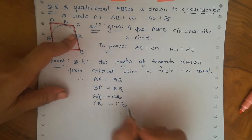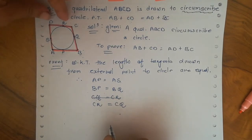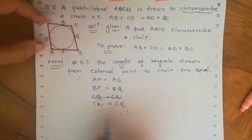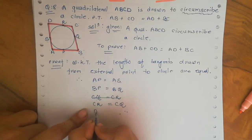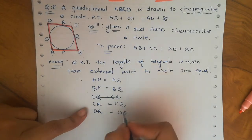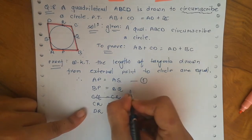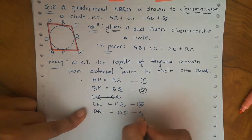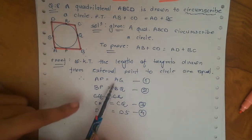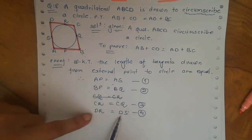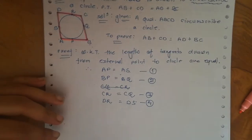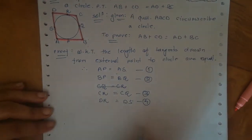To make CD, I need CR and DR. From point C we write CR equals CQ, and from point D we write DR equals DS — not DS equals DR. This order matters. Label these as equations 1, 2, 3, and 4. These are the lengths of tangents drawn from external points A, B, C, and D to the circle.